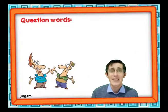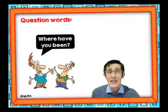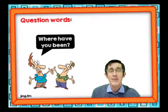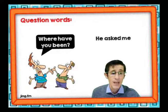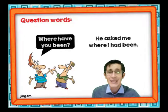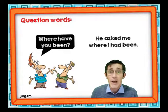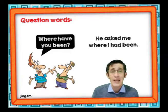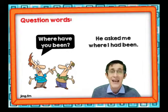Vamos con el siguiente ejemplo: dos amigos que se encuentran. 'Where have you been?' ¿Dónde has estado? ¿Cómo lo transformamos a reported speech? He asked me where I had been. La pregunta original está en presente perfecto y para reportarla la hacemos en pasado perfecto. Él me preguntó dónde yo había estado.